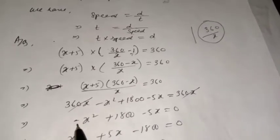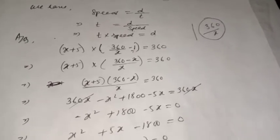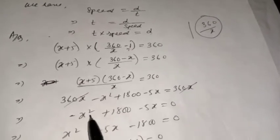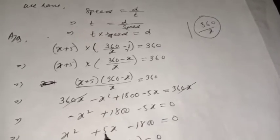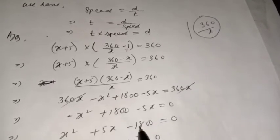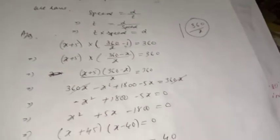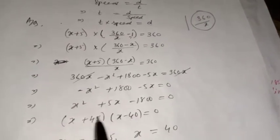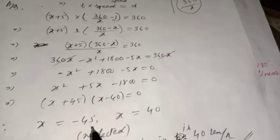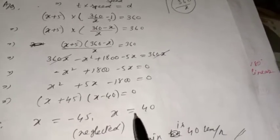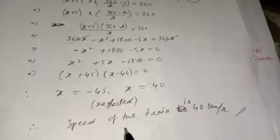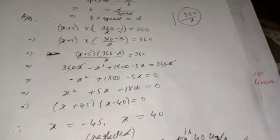To get standard form, multiply by minus one: x² + 5x − 1800 = 0. Factorizing: (x+45)(x−40) = 0, giving x = −45 or x = 40. Speed can never be negative, so x = −45 is neglected. Therefore the speed of the train is 40 kilometers per hour.